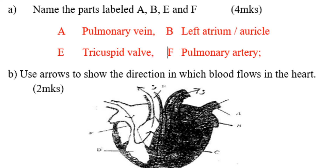Part A: name the parts labeled A, B, E, and F. A is the pulmonary vein; B is the left atrium, also called the auricle; E is the tricuspid valve; F is the pulmonary artery. Part B: use arrows to show the direction in which blood flows in the heart. You can see how the arrows have been drawn in the diagram here.